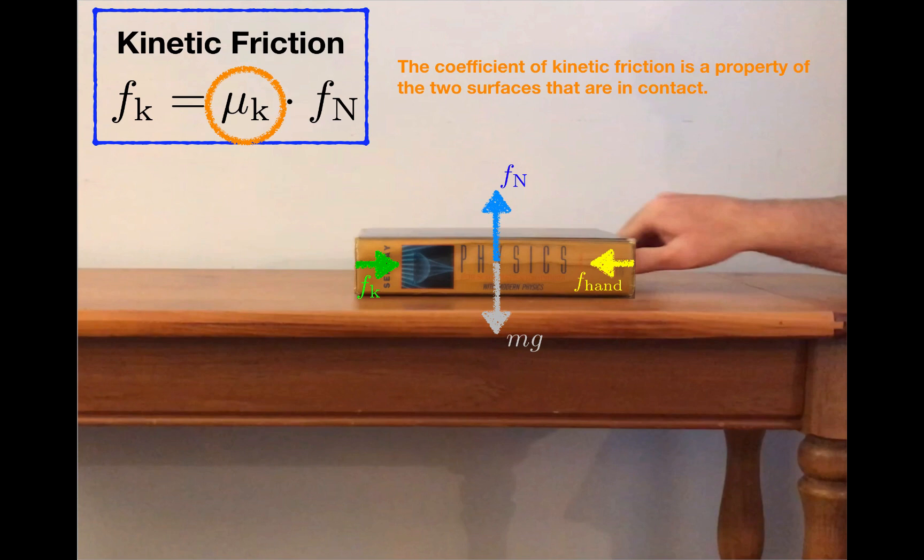The value of the coefficient of friction depends on the two surfaces that are in contact, so mu sub k would be different for the book sliding over the table than for the book sliding over the pavement. Notice also that the equation uses the normal force rather than mg. F sub n and mg happen to be equal in this example, but there are plenty of cases where the normal force is not equal to mg, or has nothing at all to do with mg. It is the normal force that's the key to determining the frictional force.